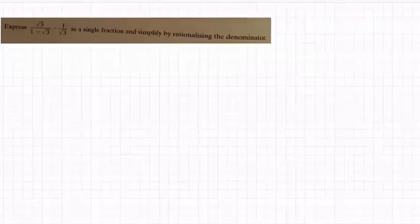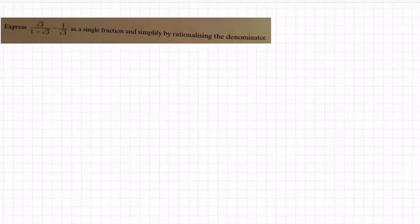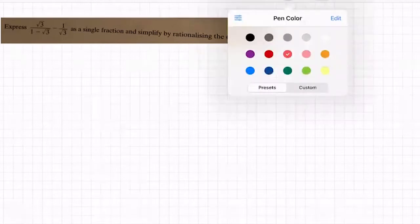Right, let's continue our work on surds with this one. Express √3 over 1 minus √3 minus 1 over √3 as a single fraction and simplify by rationalizing the denominator. So this builds on the work we were doing last week, where we looked at the rules of surds.